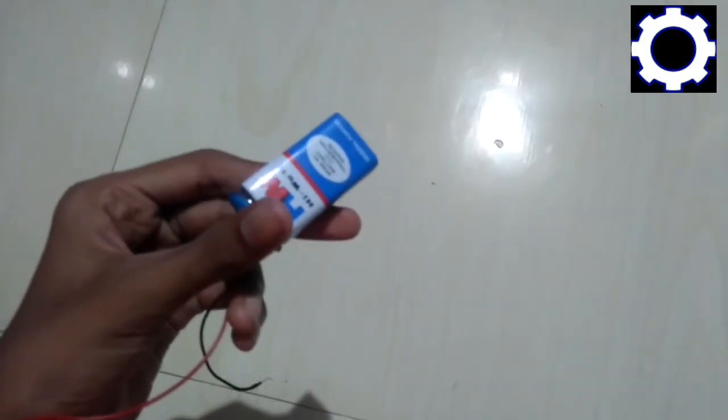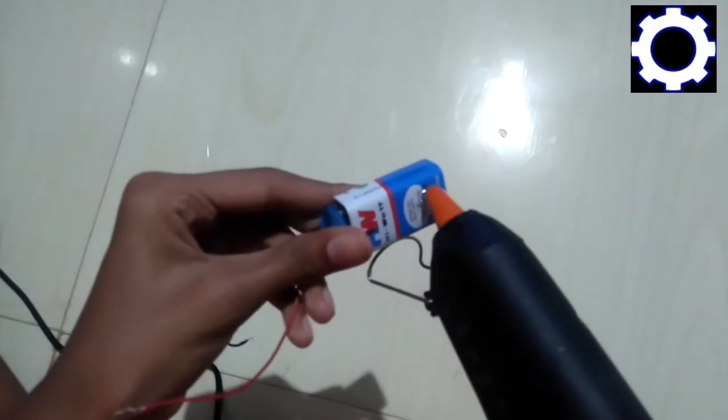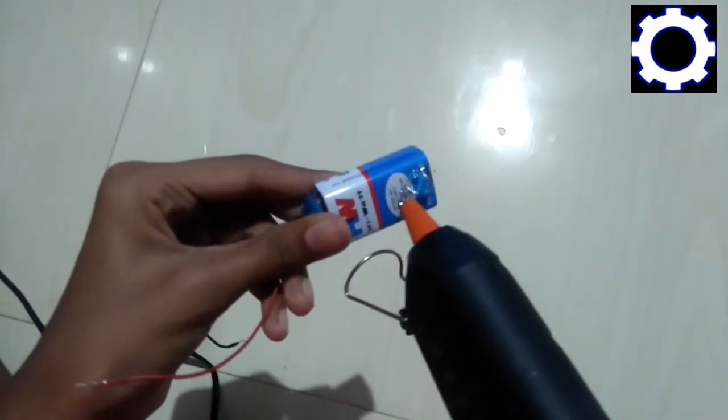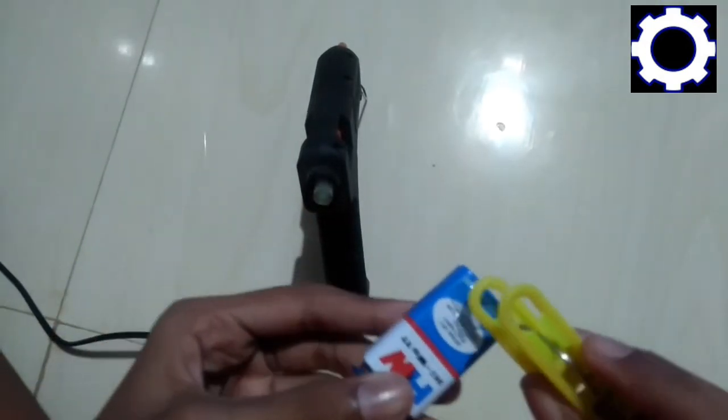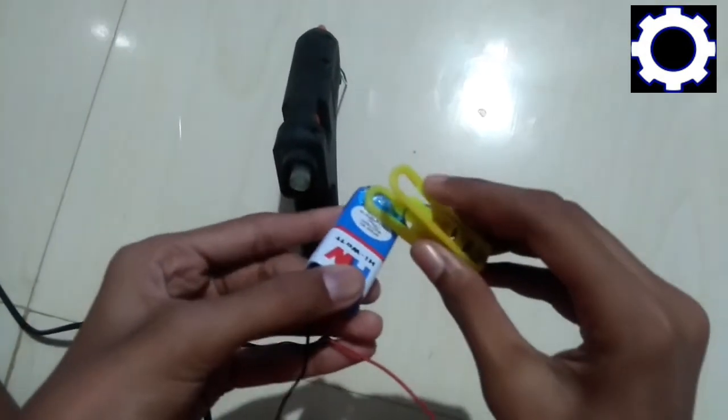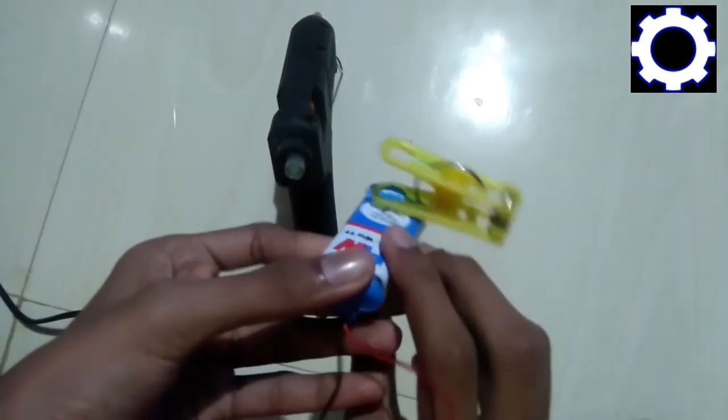You need to take a 9-volt battery and the cloth pack. Paste it with glue gun, or you can use any type of glue. I am using glue gun. I pasted the glue and glued it at the leg of the cloth pack.